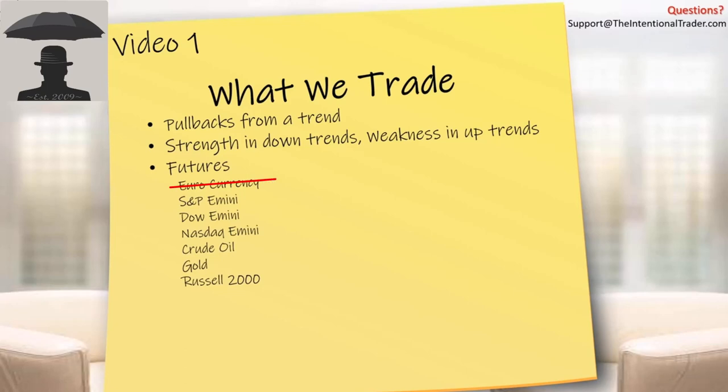Currently we're trading these futures instruments. As of this recording, we are trading the euro currency as well as the Russell 2000 in our trade room. We are planning to phase out the euro currency for the time being. What we're looking for are very liquid instruments with a good bit of volatility — these are the instruments that market makers are interested in manipulating, which means we're very interested in those instruments as well.